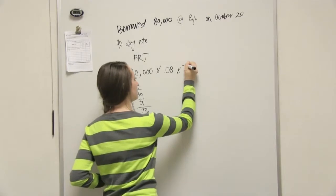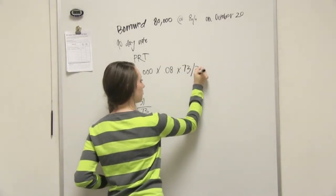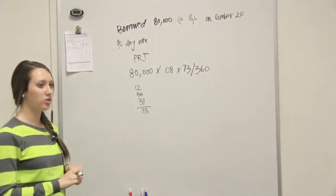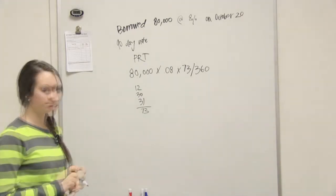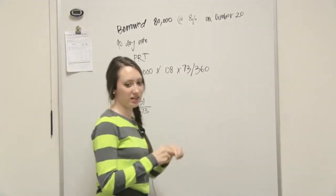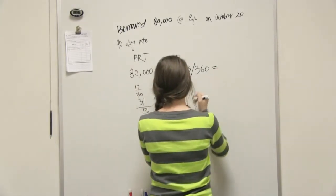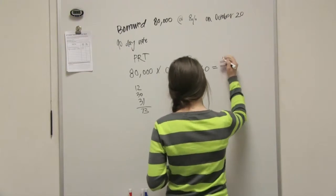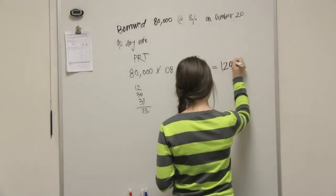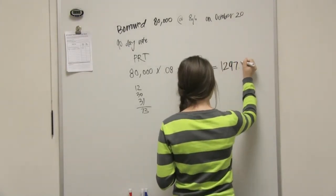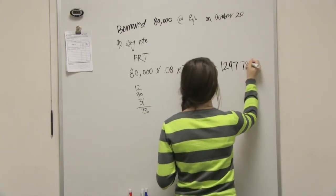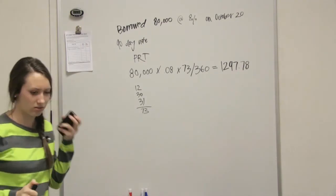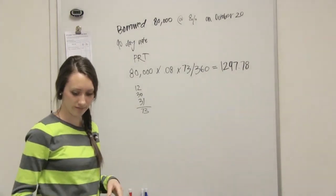So then we'll do 73 divided by 360. For interest, you only count for 360 days. So you just multiply that out, and that would give you your interest expense. So $1,297.78, so they could tell you to round to the nearest dollar or whatever.